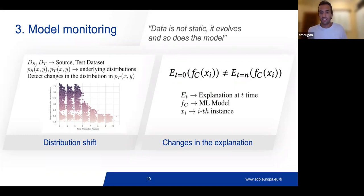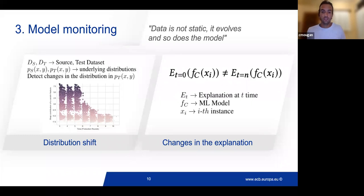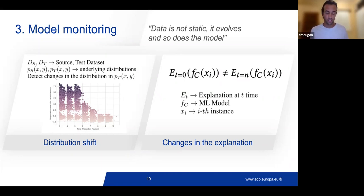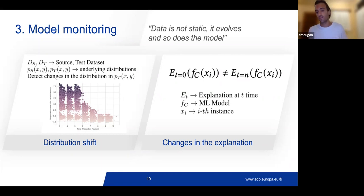On the other hand, we have changes in explanation. Data is not static — it evolves, and so does the model. An explanation for a certain instance Xi today can be different in a year for the same instance. This is a very big problem for ensuring trust in our machine learning systems. How can we feel confident in a system when every time we try to explain it, we get different types of explanation?